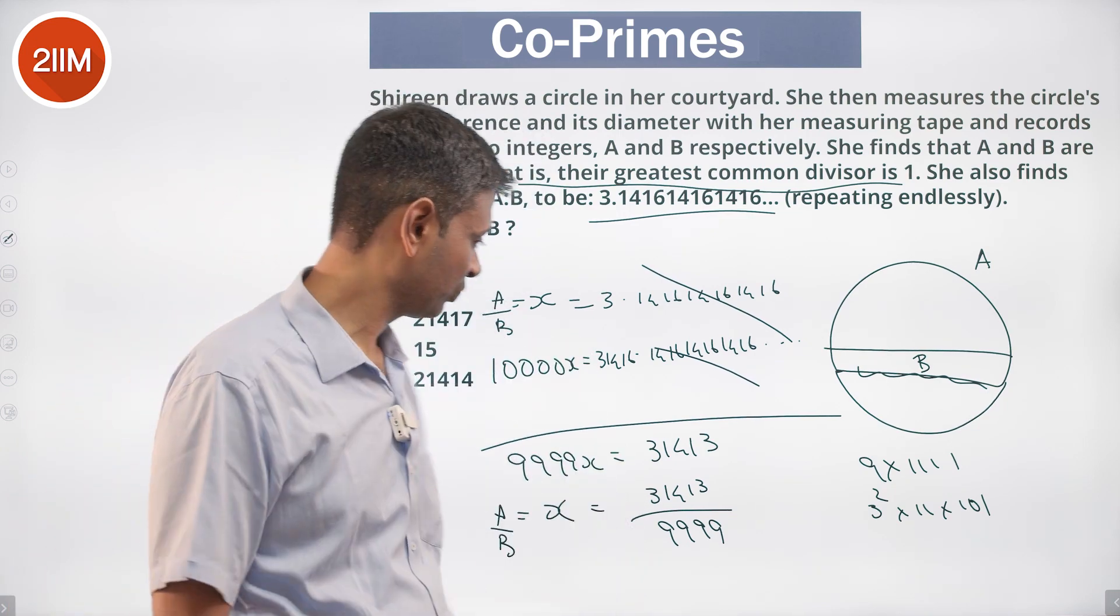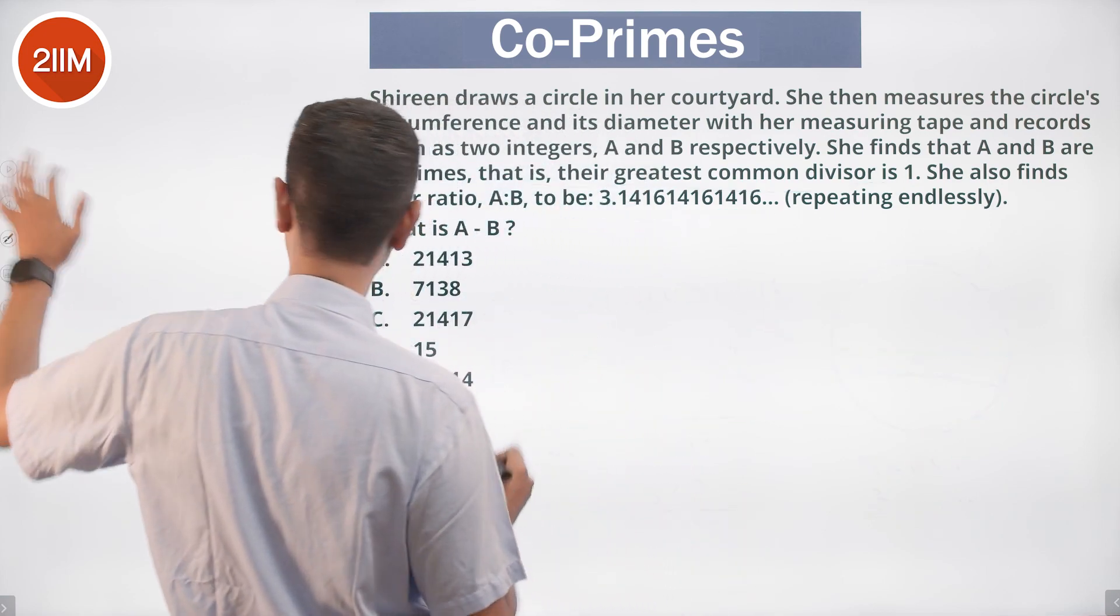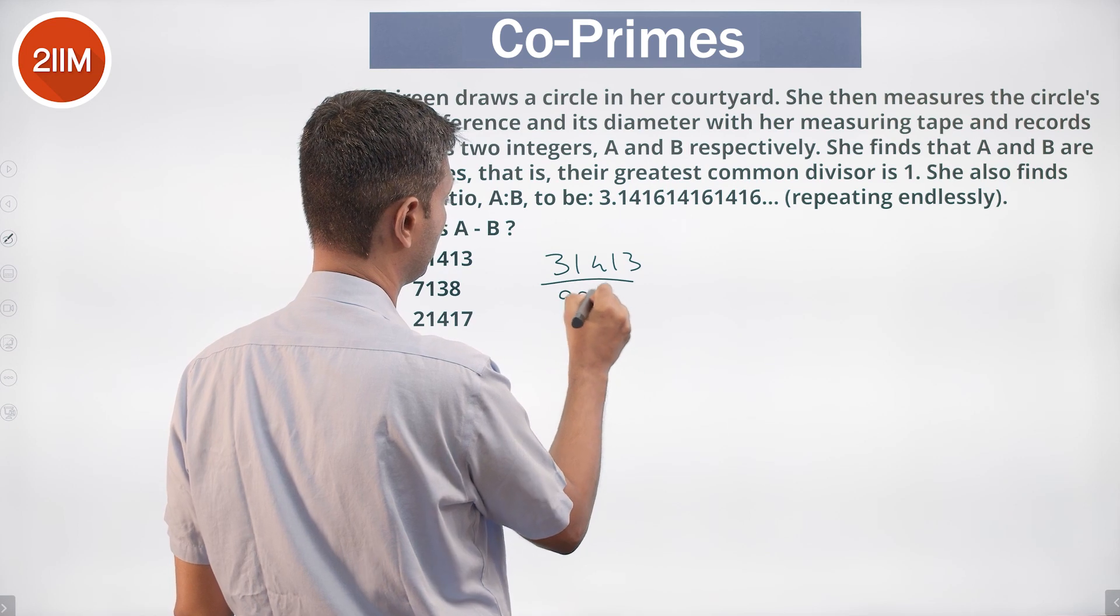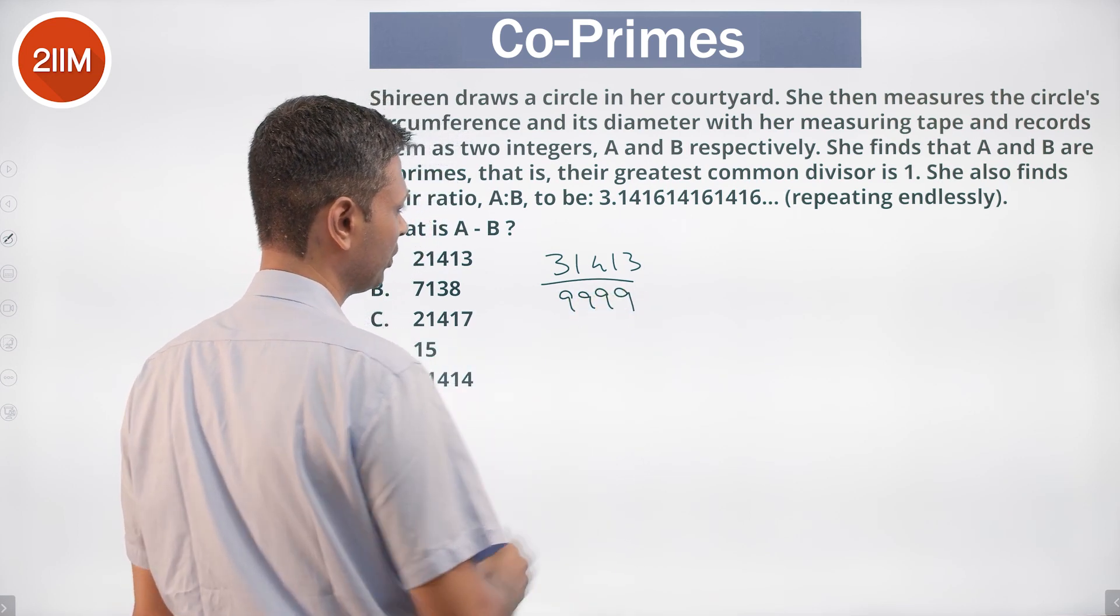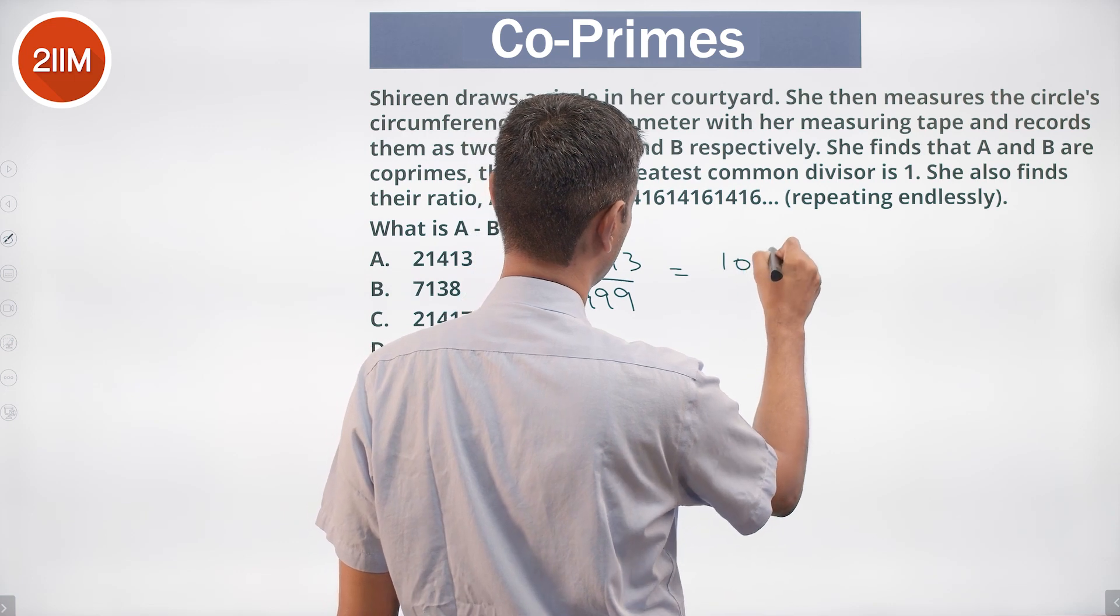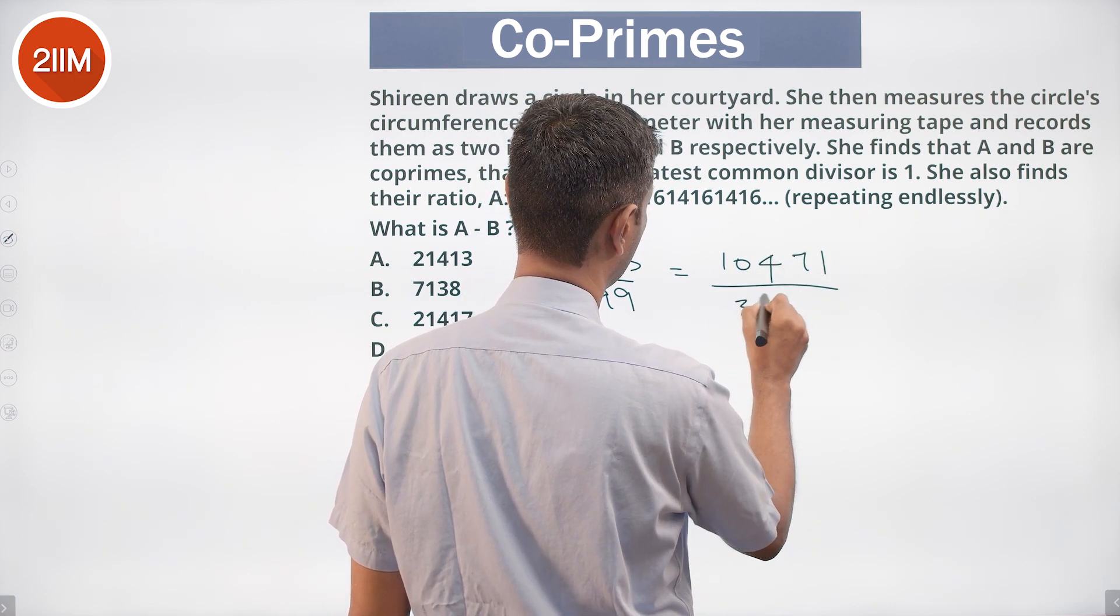Let's first cancel off a 3. Divide this by 3. 31413 by 9999, this is A by B. Divide this by 3. 10471 makes it 10471. Divided by 3333.